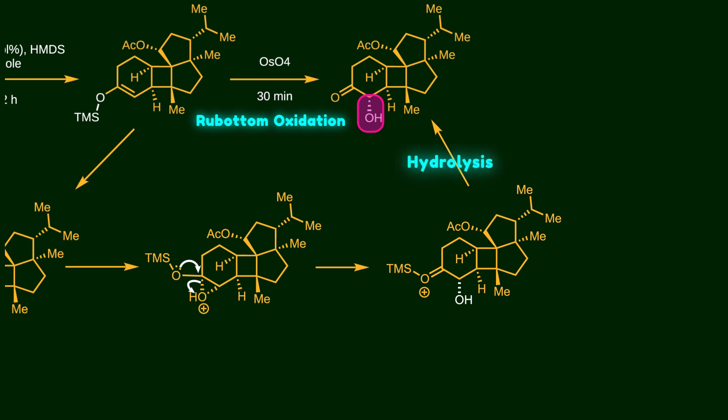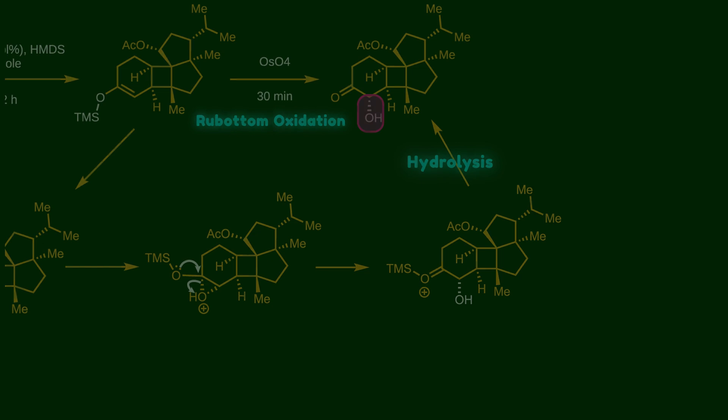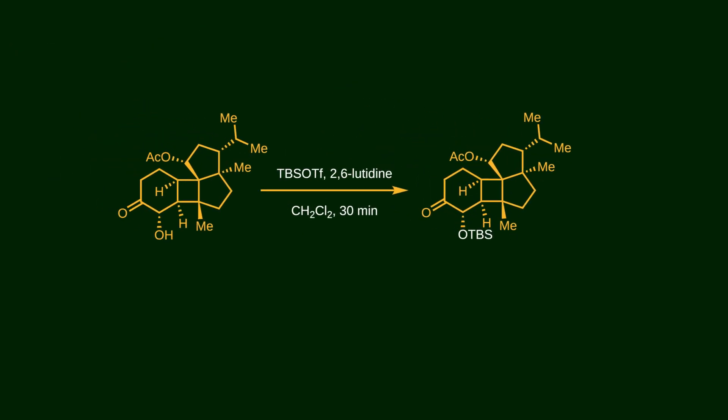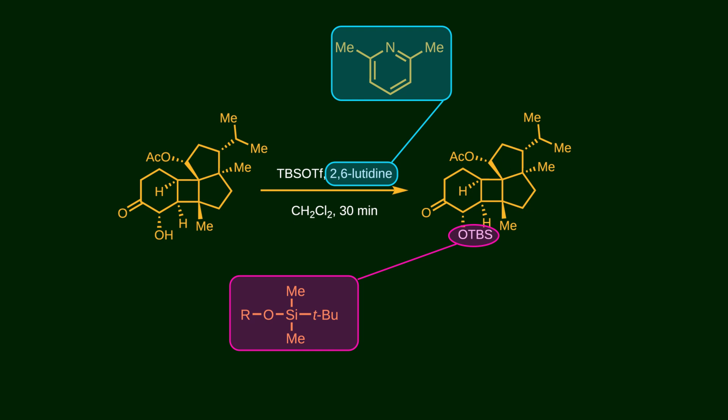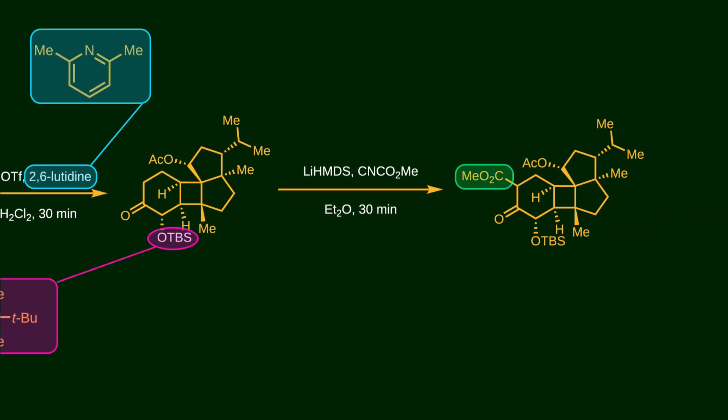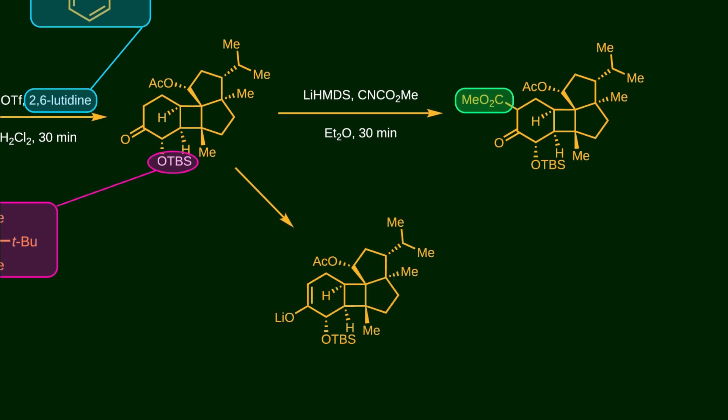Finally, after hydrolysis, the desired product is formed. In the next step, the hydroxy group is protected by TBS using 2,6-lutidine as a base. After that, we're going to install an ester group at this position to create a beta-ketoester. To do this, LiHMDS is used to form the enolate, which then attacks methyl cyanoformate, also known as Mander's reagent.